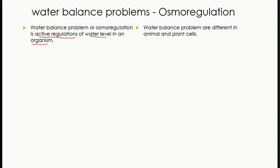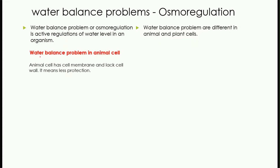How much water should be present in the cell, how much water should be removed from the cell — this is what we call water balance. The problem comes when that water balance is disturbed. Water balance is different in animal and plant cells, and in this video we are going to study both cases. Let's study the animal cell case first.